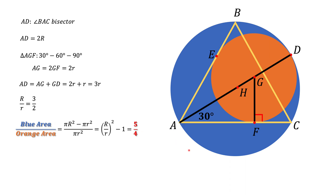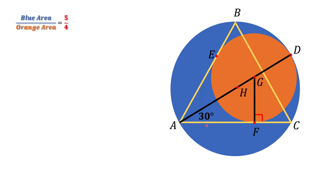We're almost done with this problem. The only thing remaining is to show that points A, H, G, and D lie on the same line, and that AD is the bisector of angle A. So let's do that.